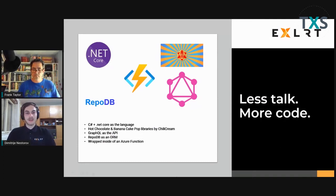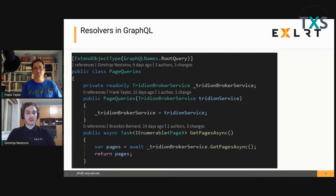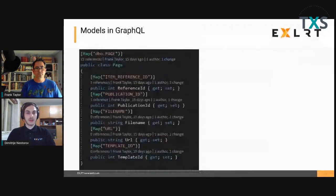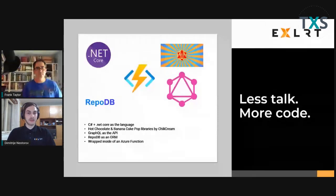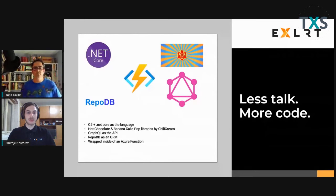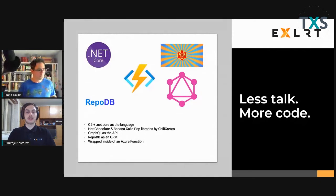Let's talk about how we did it. We developed the API in C# .NET technology, used the Hot Chocolate libraries from Chili Cream, and went with RepoDB as ORM. In that way, we managed to create a successful GraphQL API, all wrapped inside an Azure Function so that we could get on-demand data. We used the annotation-based approach of developing the GraphQL API, and Hot Chocolate hides a lot of things from us which makes implementation a lot easier — those folks were mostly focusing on performance.